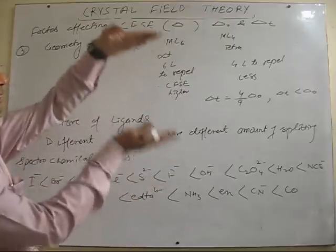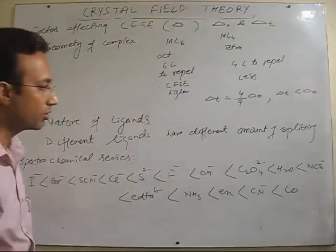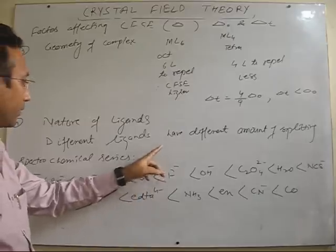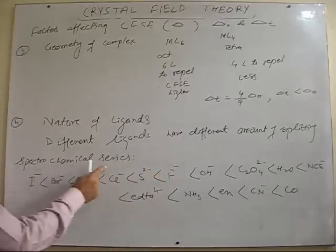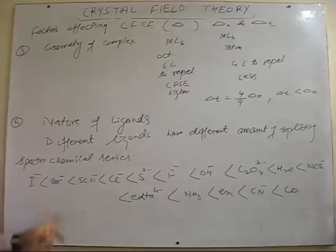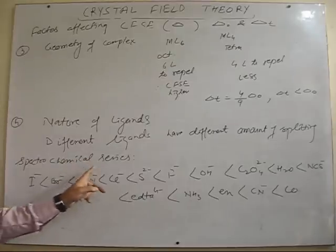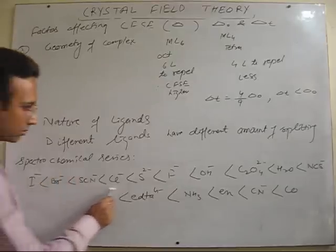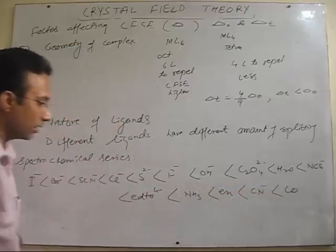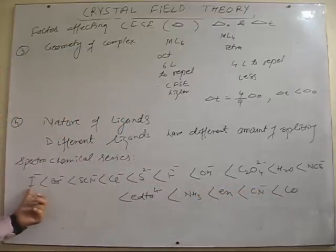So, different ligands have different energy splitting powers. There is a spectrochemical series which decides the splitting power of different ligands if coordinated with the same metal. So, in general, it is found here that this is the series, I have taken it from NCERT book.